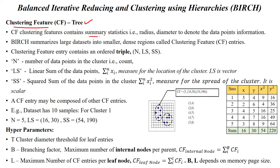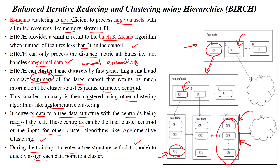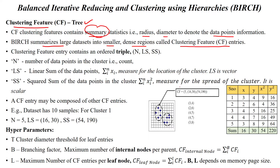The clustering feature tree contains summary statistics — radius and diameter — to denote the data points' information. This summary statistics will give you much information about the pattern for the given data points. BIRCH summarizes large datasets into smaller and dense regions, which are called clustering feature entries. Each clustering feature entry will have ordered triples: the number of data points in the clustering feature, the linear sum of the clustering feature, and the squared sum of the clustering feature.